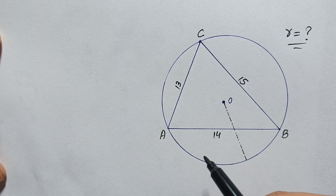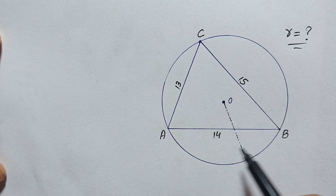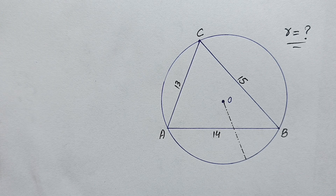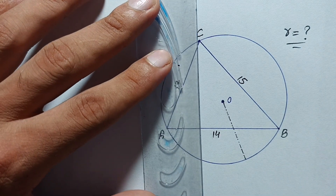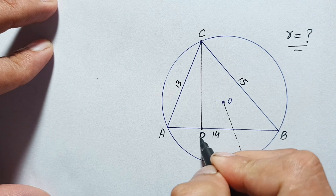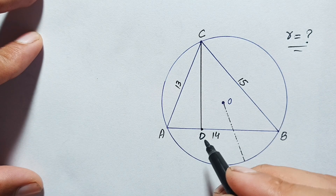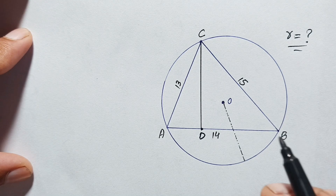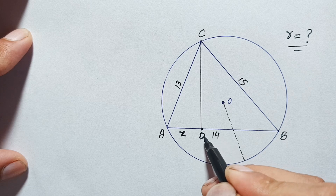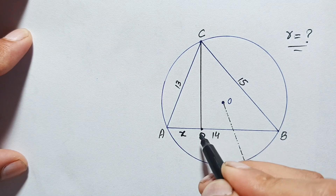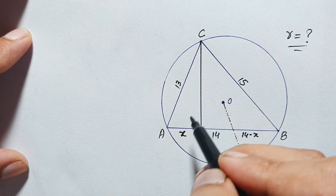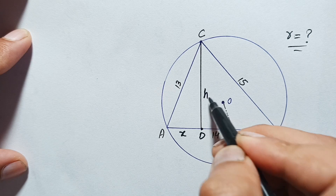First, we will draw a perpendicular from point C to segment AB to make right angle triangles. Let this foot of the perpendicular be point D. This gives us right angle triangle ACD and right angle triangle CDB. Since AB is 14 units, let AD = x, so DB = 14 minus x. Let the height of this perpendicular be h.